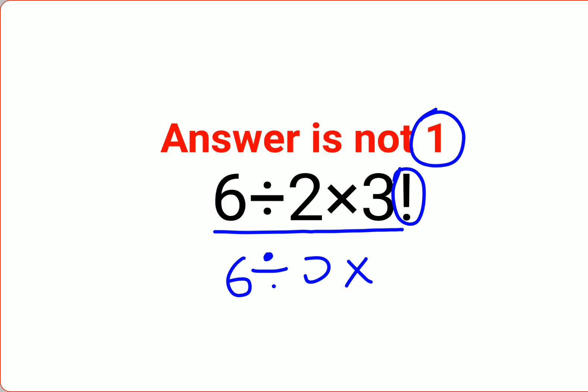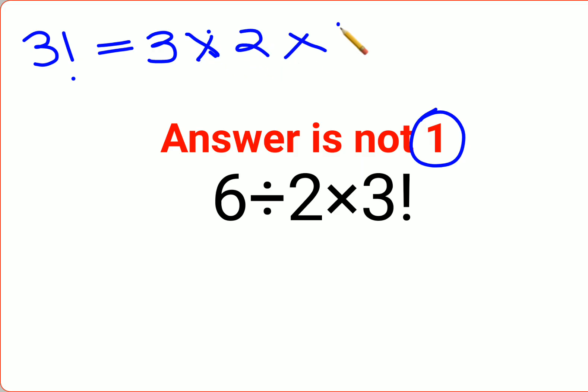Please understand, when you have something like this, first you need to realize what is 3 factorial. 3 factorial is nothing but the product of 3 multiplied by 2, and you will keep doing this until you reach the value of 1. So this comes out to be 6. So the question is 6 divided by